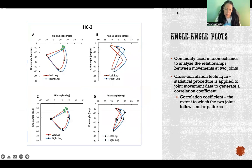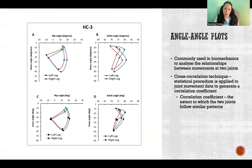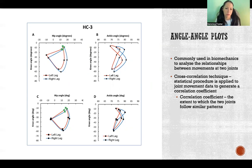So angle-angle plots are used most often in biomechanics to analyze relationships between movement at two joints. So if you plot the movement of two joints in the same diagram or in the same graph, then you can compare the movements of those two joints during those same phases or at those same time points.